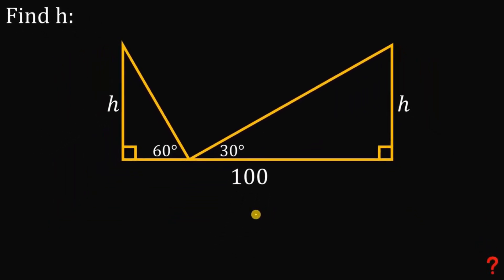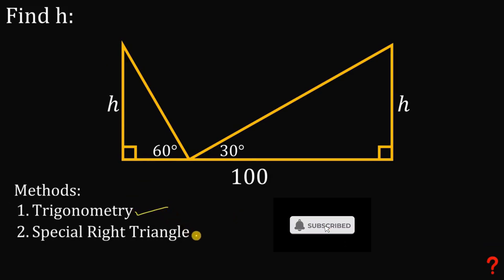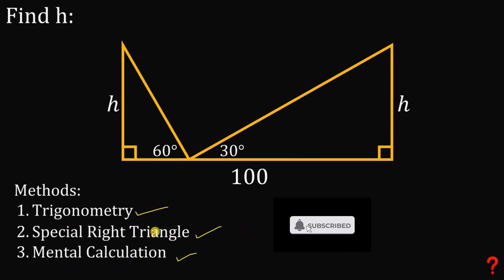To answer this question, I'll present three different methods to solve for the value of H. The first one is by using trigonometry. The second one is by using the special right triangle, specifically the 30-60-90 right triangle. And the third one — my favorite — is mental calculation, also through the use of the special right triangle.